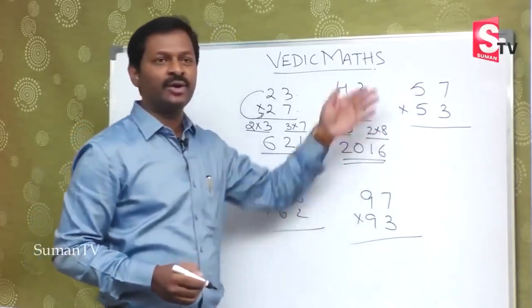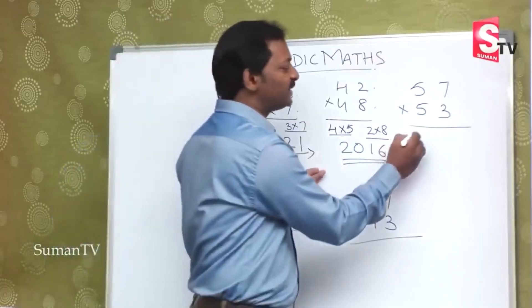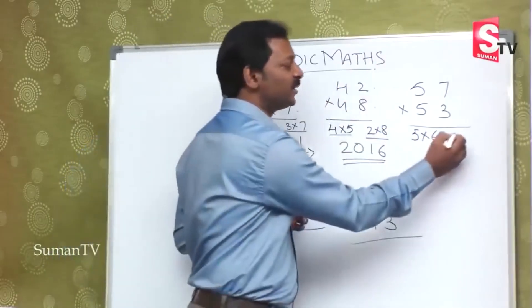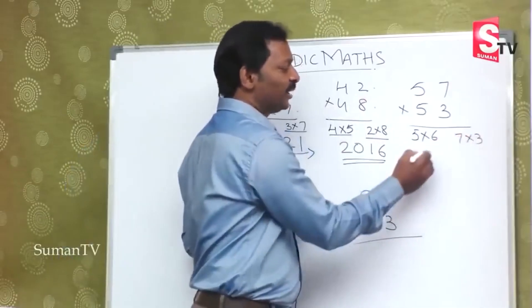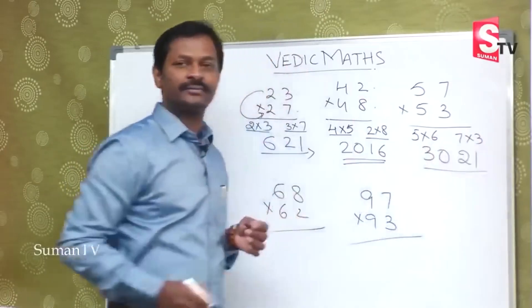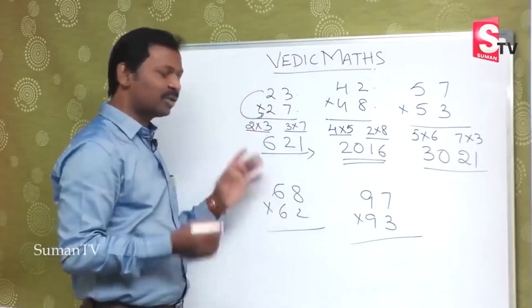That is, 5, 5 is a common number given. So 5 into 6 multiplied, and next units 7 into 3. That is, 5, 6 is 30, and this is 21. So this is the answer.